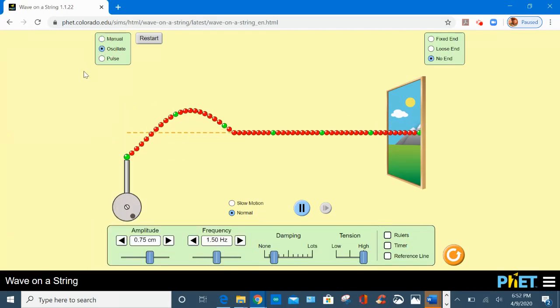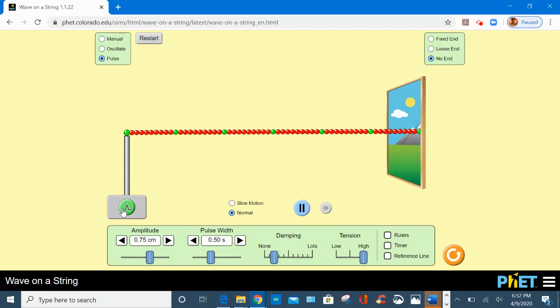And also we have the oscillate mode with more options to control a wave, and we have a pulse mode to create a pulse by pressing this green button.